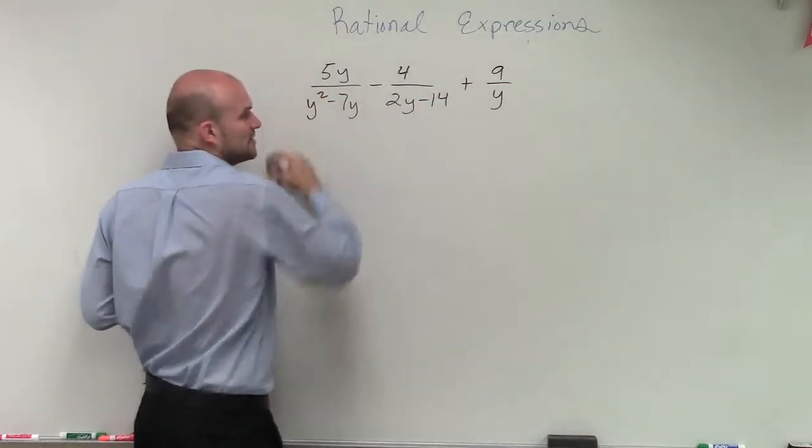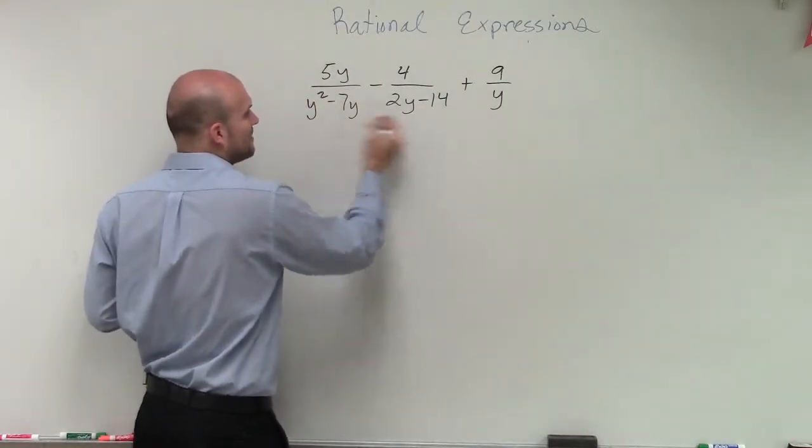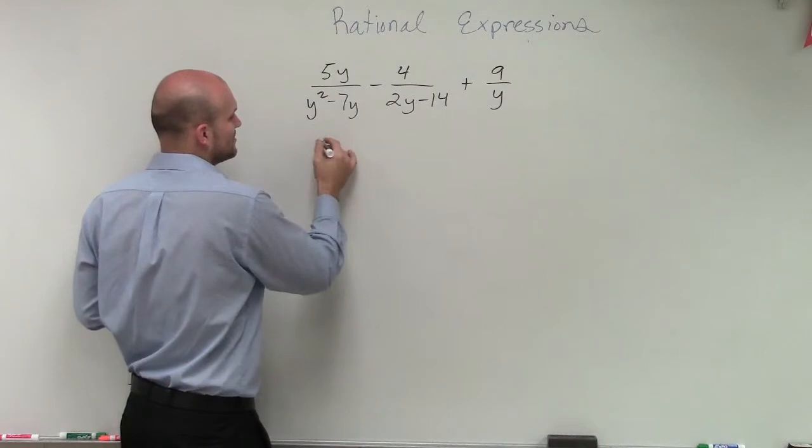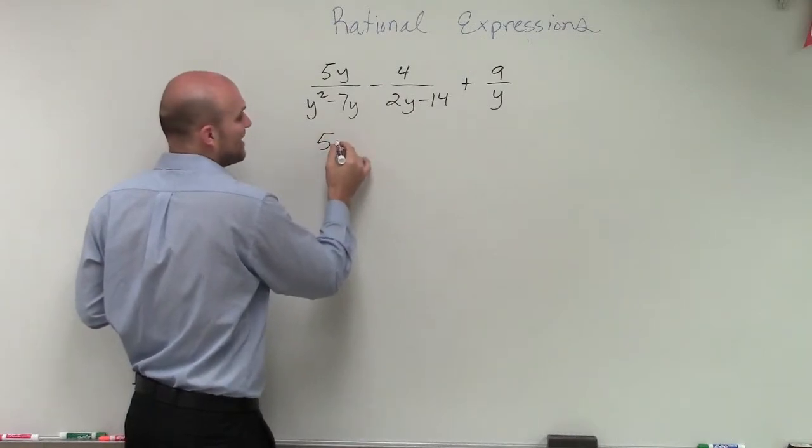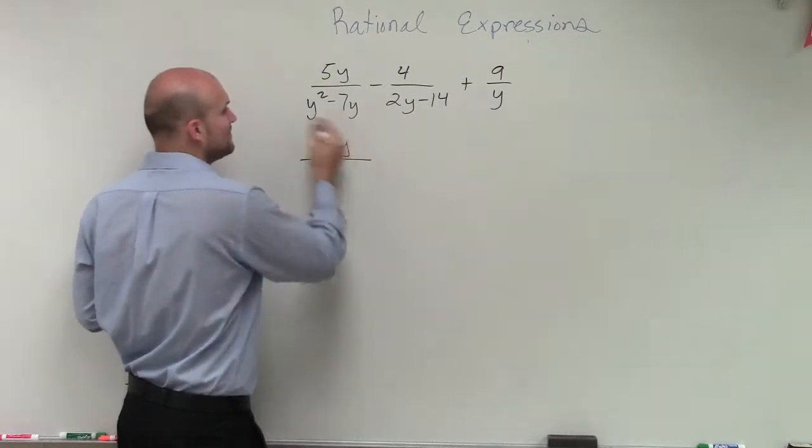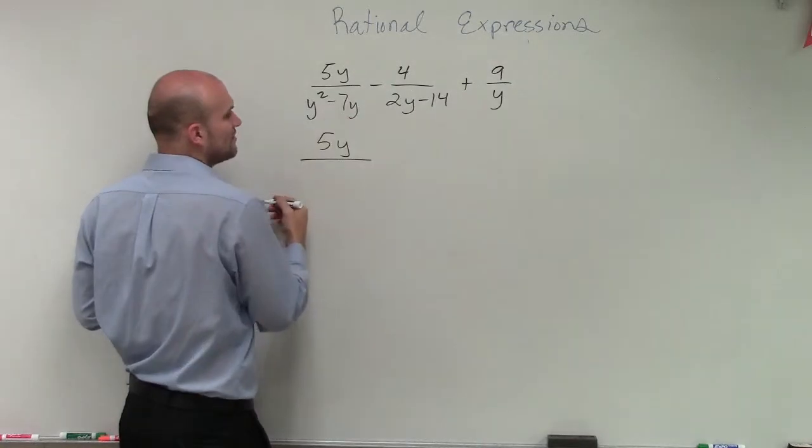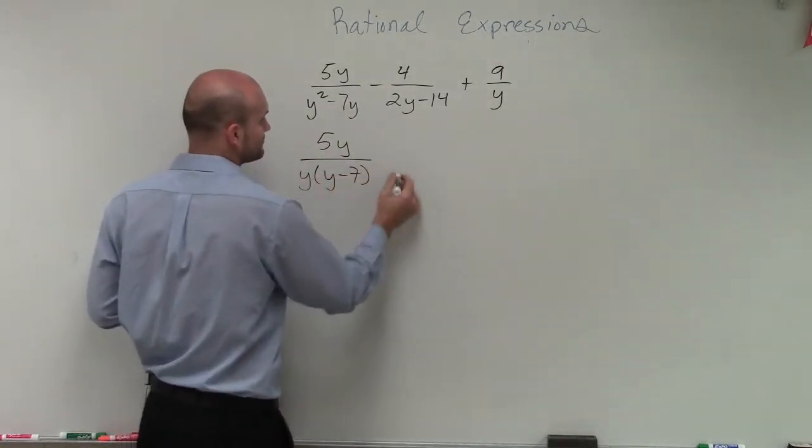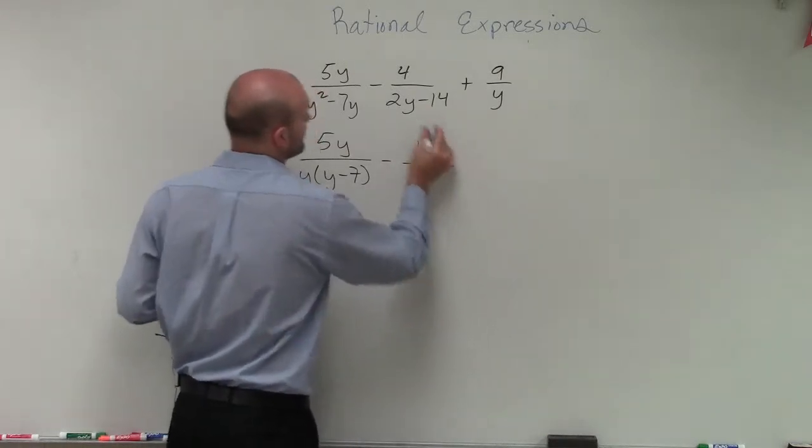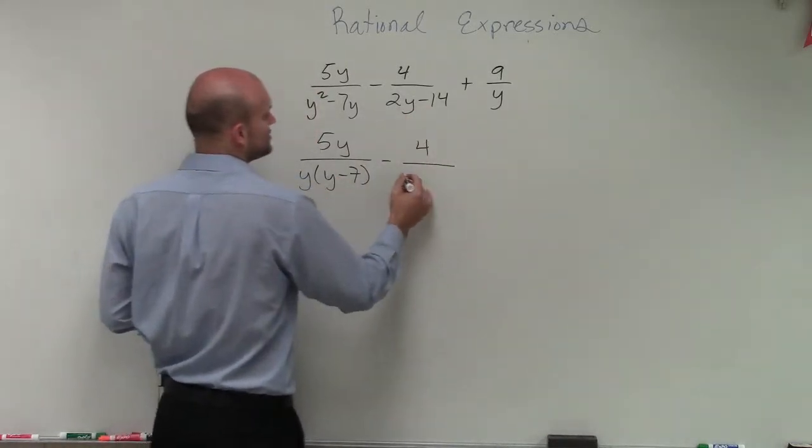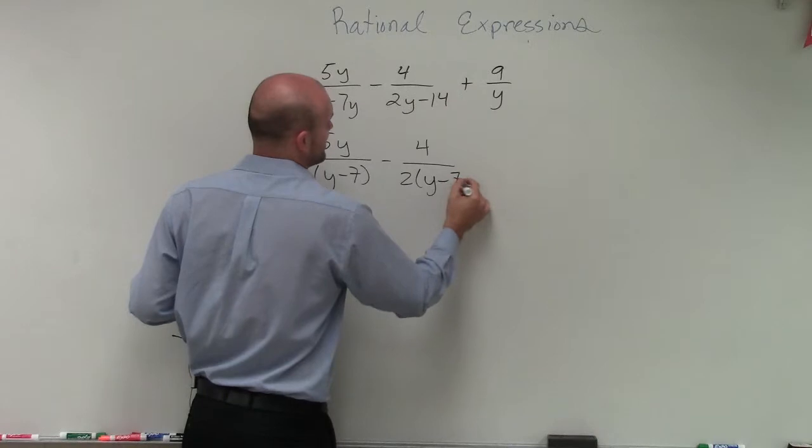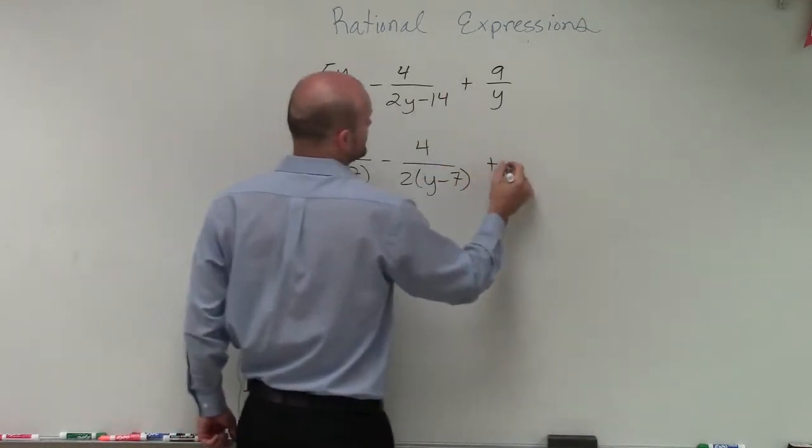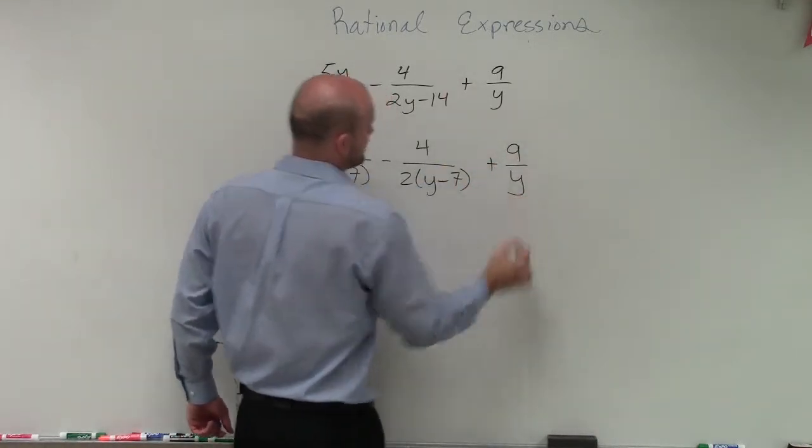So what we're going to do is first thing is let's simplify them as much as possible. So our numerators, none of our numerators we can simplify. However, our two denominators, it does look like we can apply some simplifying. So 5y, and if I simplify y squared minus 7y, I can factor out a y, which is going to leave me with a y minus 7. Minus 4 over this denominator, I can divide out a 2, so I'd be left with a y minus 7. And then this rational expression, I really can't do anything with.